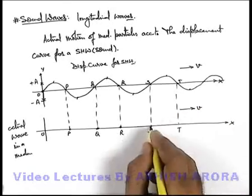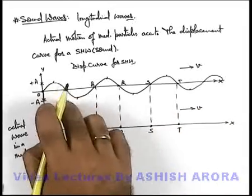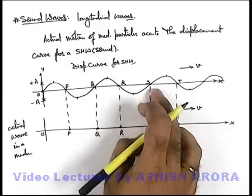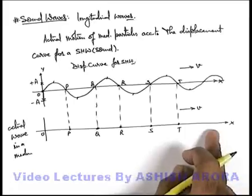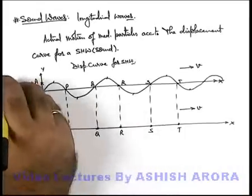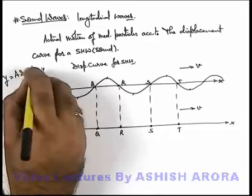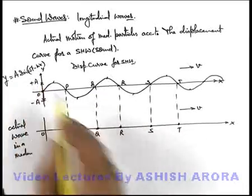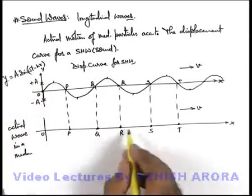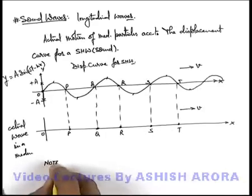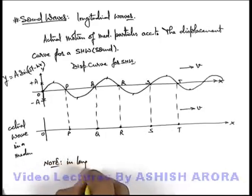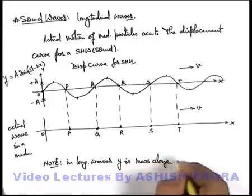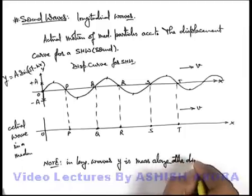Wave is propagating at a speed v. And here we can say, as the displacement curve is giving us the displacement of particles from mean position, here we can say the medium particles are oscillating along the direction of propagation. So if its equation is given as y equals to a sine of (ωt − kx), then x is giving us the position of the particle and y is the displacement. So in a longitudinal wave, displacement is given along x. Always remember — in longitudinal waves, y is measured along the direction of x only.